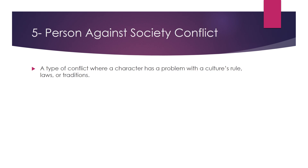The last type of conflict today is person against society. It is a type of conflict where a character has a problem with the culture's rules, laws, or traditions. We find this type of conflict mostly in novels and greater writings, but we also find it in short story. Here the protagonist tries to face his society — its corruption, its degeneration, and its bad conditions and circumstances.